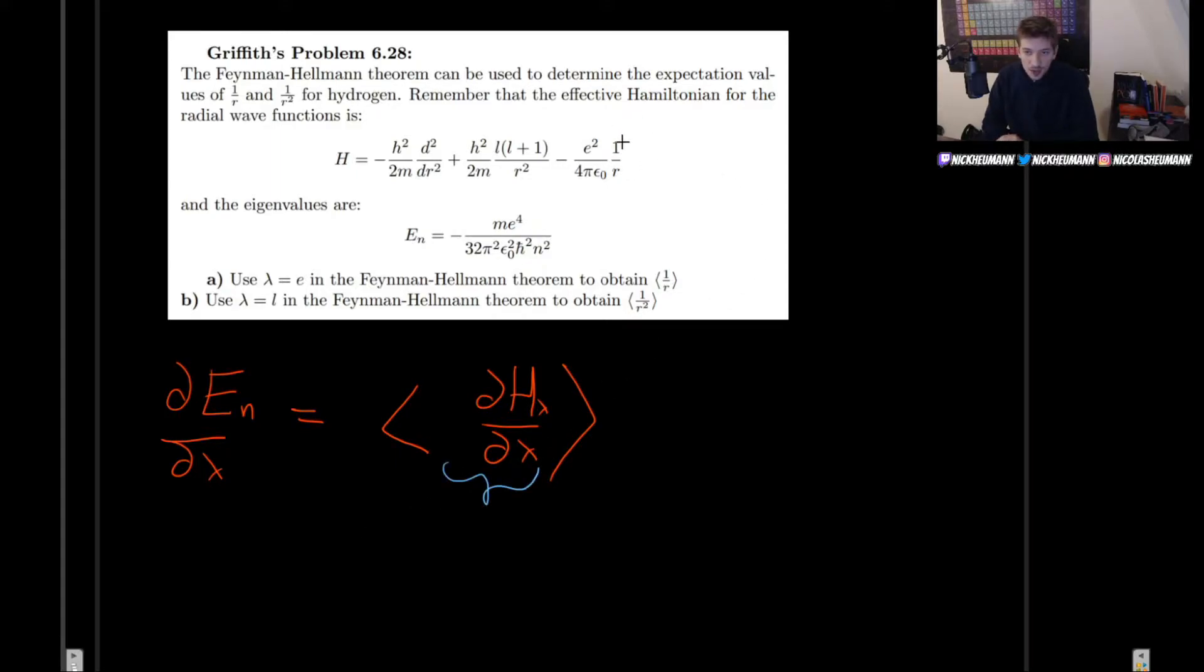So, if we want to find the expectation value of 1 over r, we want to find something that when we plug it in here, it will have 1 over r. And if we look at this, the only way that it happens is with this term right here. So, there's no 1 over r here or here. It's 1 over r squared. So, the only way that we can get it is if we use a parameter that is somewhere in here. And the best parameter here would be e, because that's also in the energy part. Okay, that's why we choose the parameter to be e.